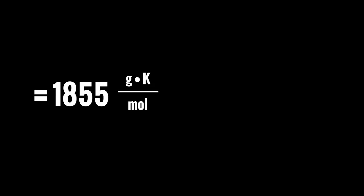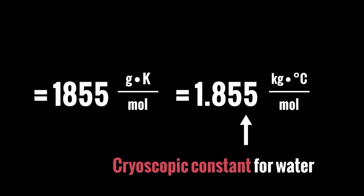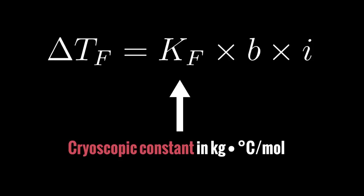Evaluate this, and we get 1.855 grams Kelvin per mole. Or we can convert to more usable units, 1.855 kilograms degrees Celsius per mole. And so 1.855 kilograms degrees Celsius per mole is the cryoscopic constant for water. It's really important to remember this constant because it's used a lot.